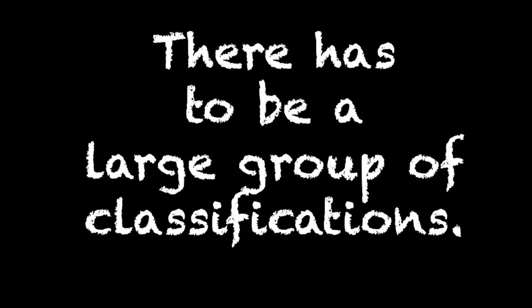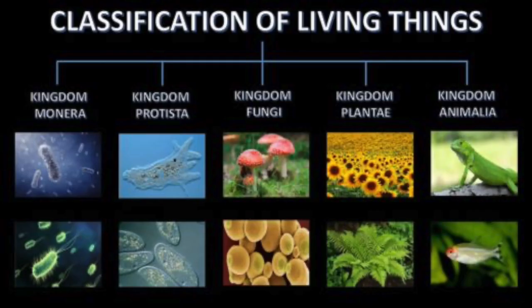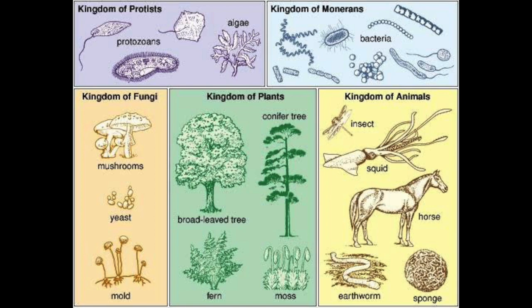First things first, there has to be a large group of classifications. The largest group into which scientists classify living things is called a kingdom. There are five kingdoms: the Monera, Protist, Fungus, Plant, and Animal kingdoms. Organisms in the same kingdom share more traits with each other than they do with any organism in any other kingdom.